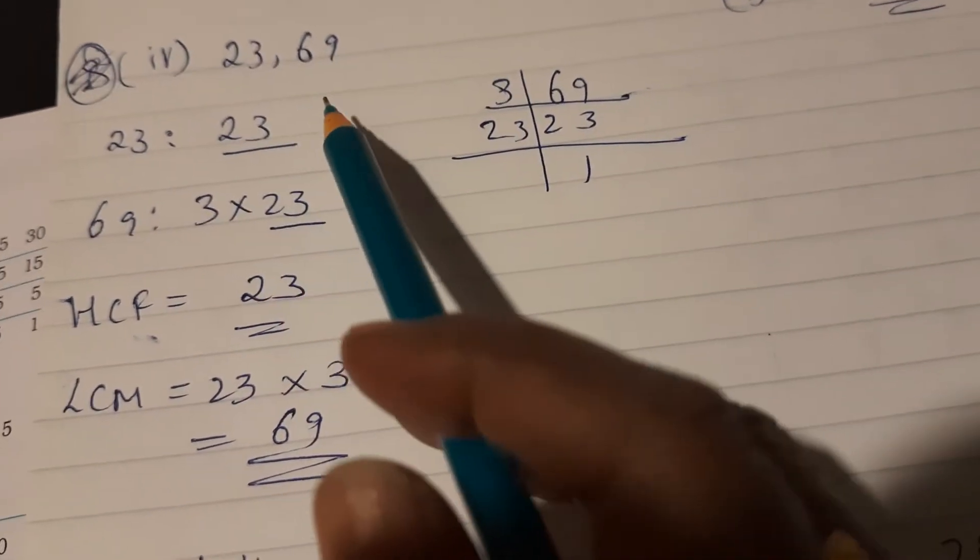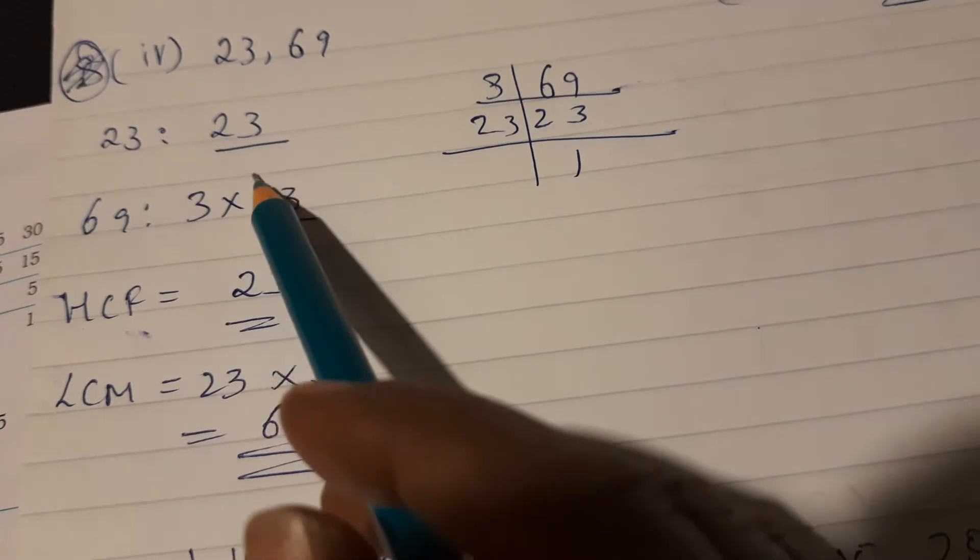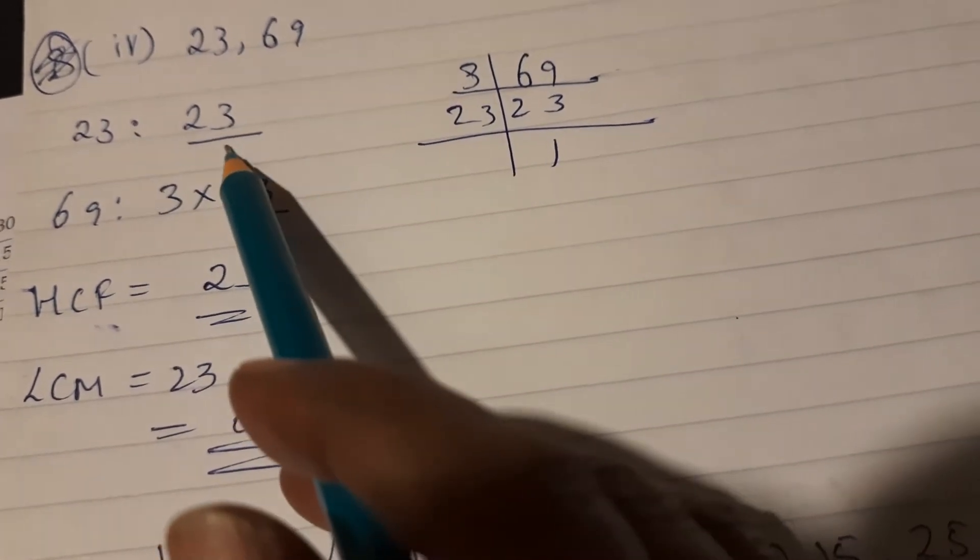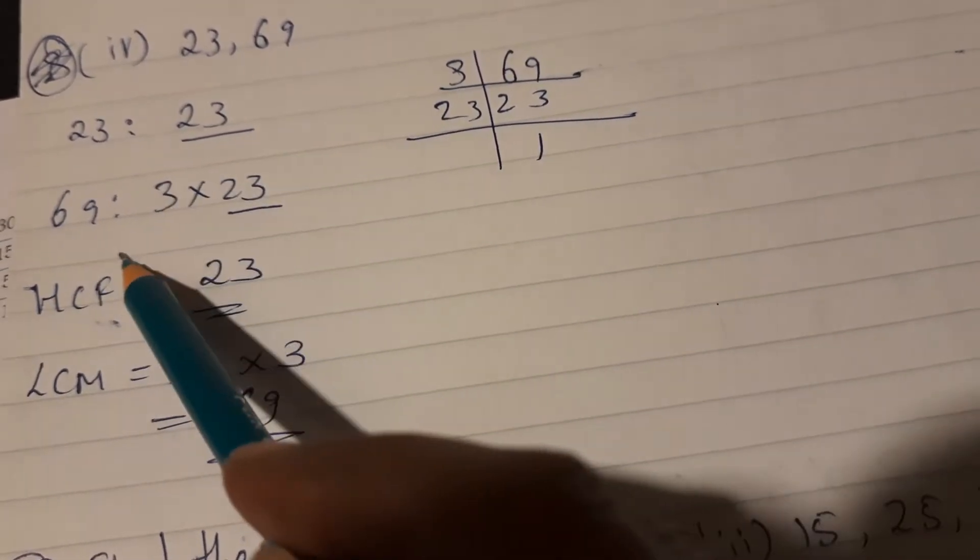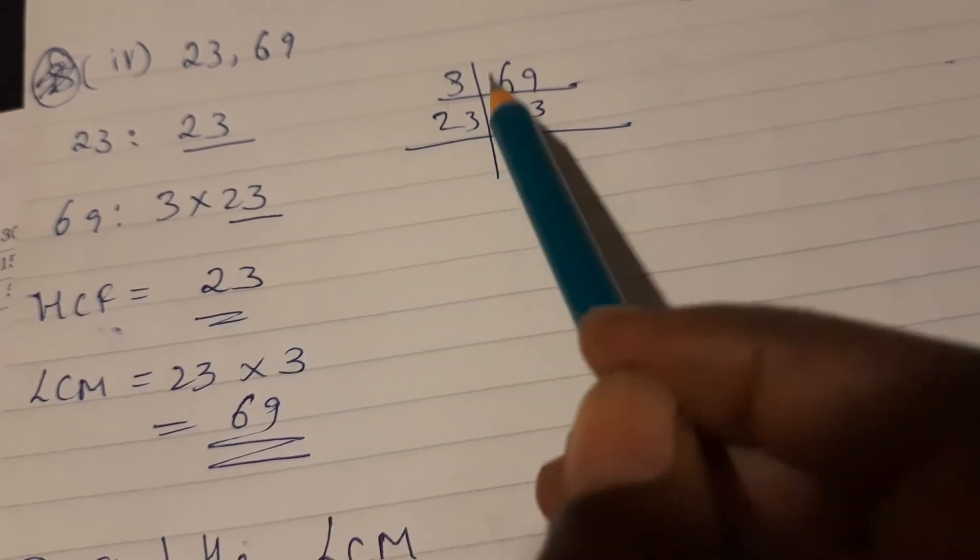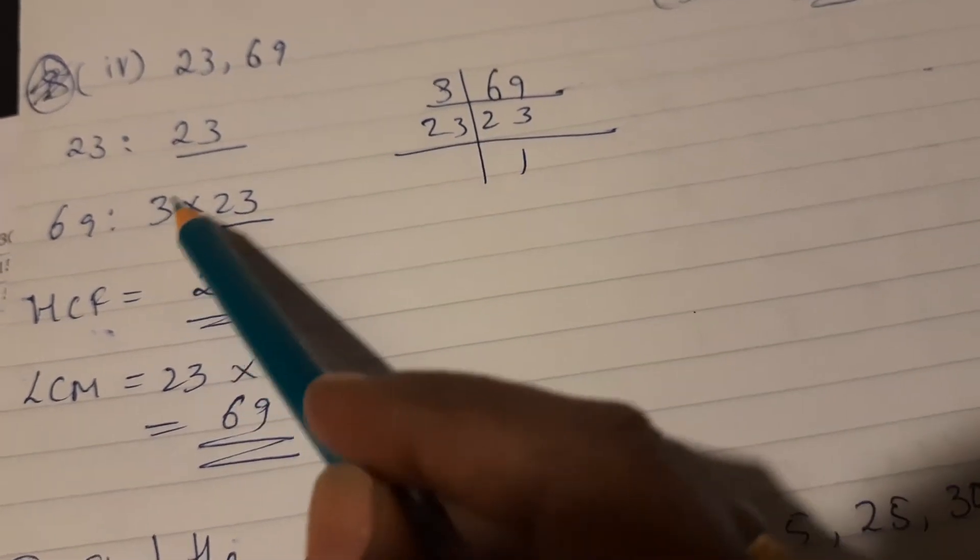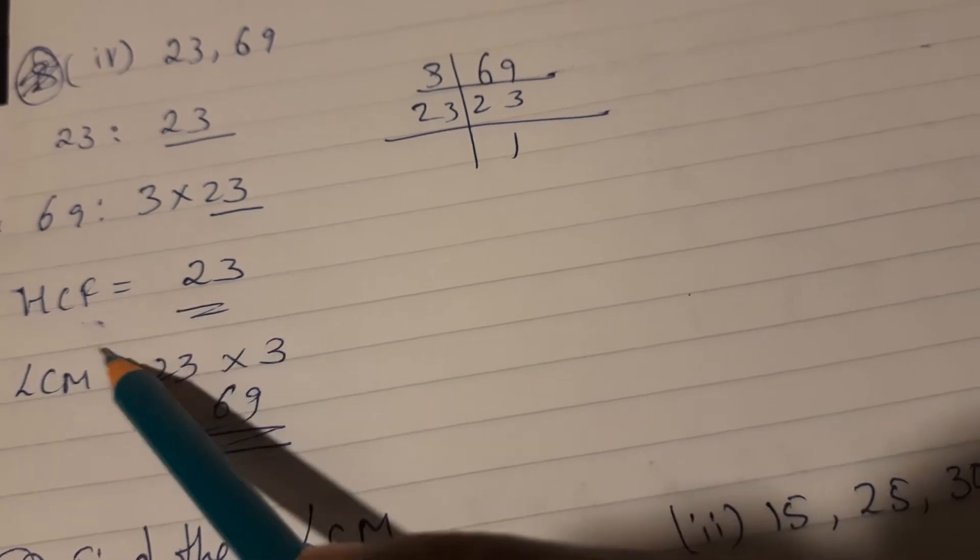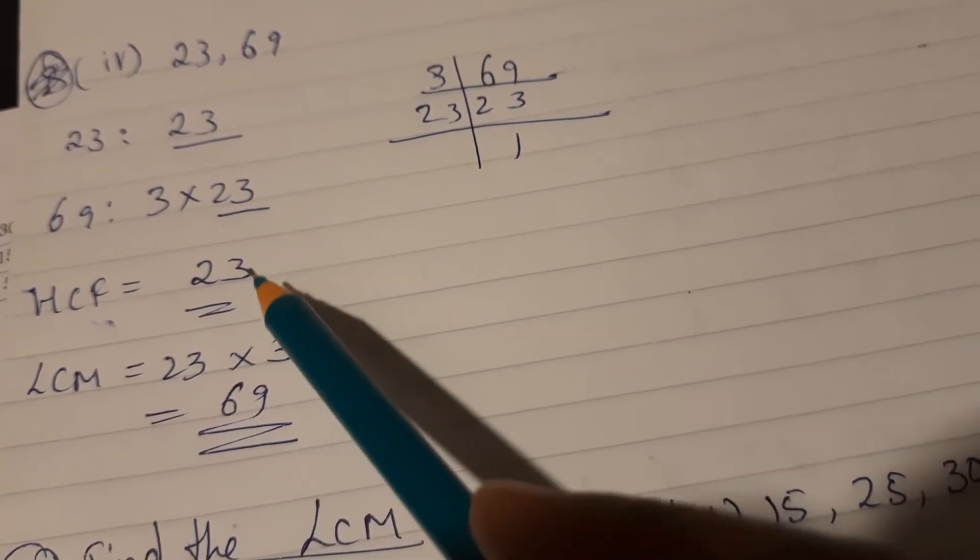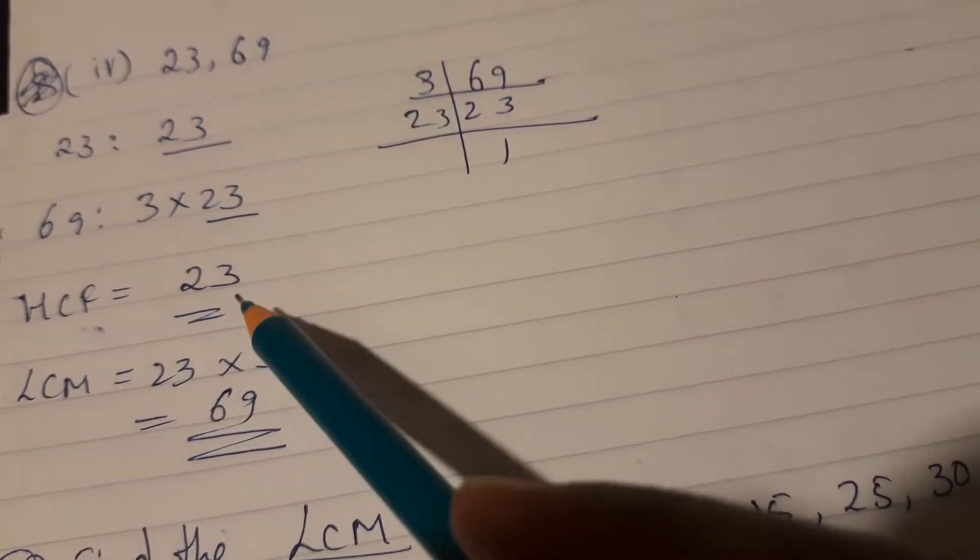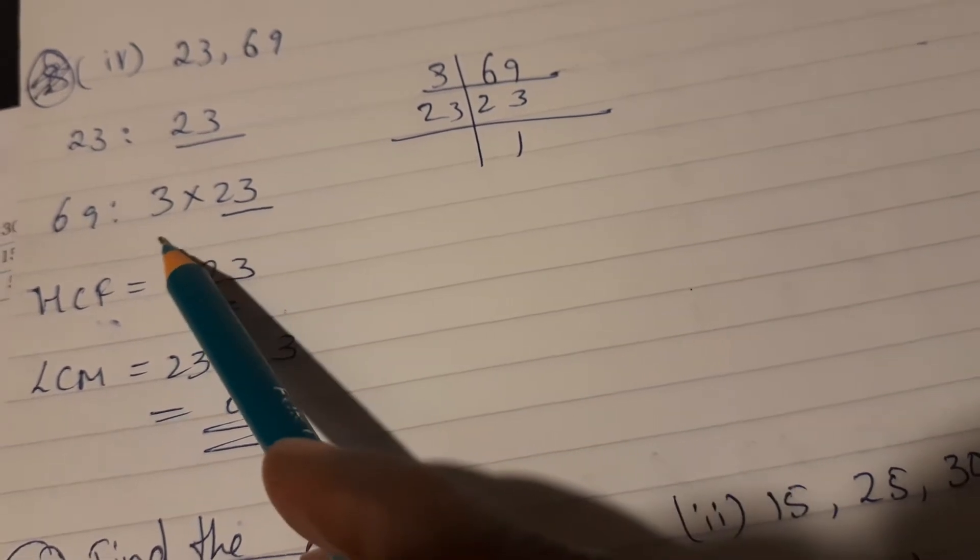23 and 69. 23 is a prime number. Prime factors of 69 are 3 into 23. So what is common? 23 is common, and the HCF of 23 and 69 is 23. So common into the uncommon, that is 3.